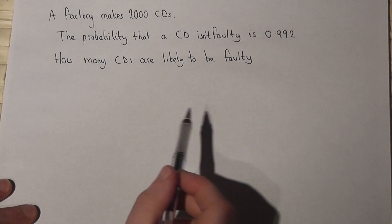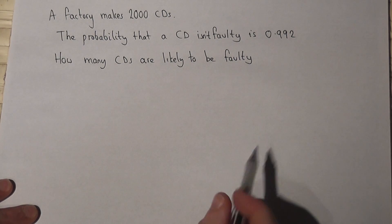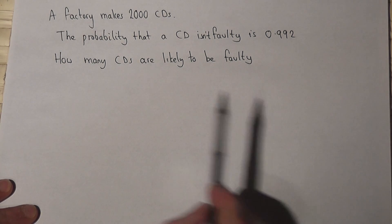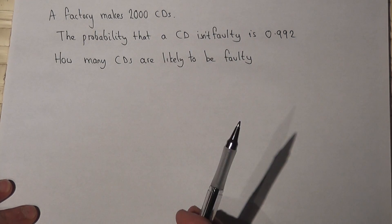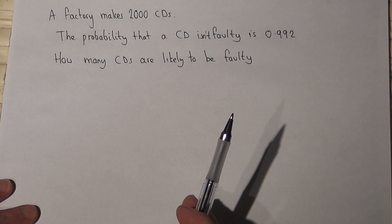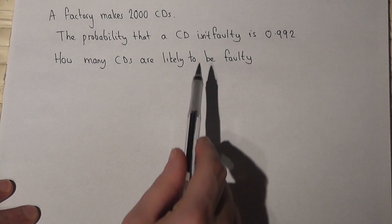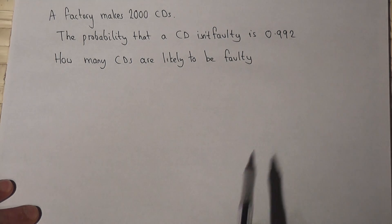This video looks at expectation and likelihood using a very simple example. We're told that a factory makes 2000 CDs and that the probability that a CD isn't faulty is 0.992. How many CDs are likely to be faulty?